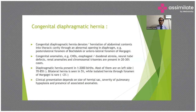Congenital anomalies associated with diaphragmatic hernia include congenital heart disease, esophageal or duodenal atresia, neural tube defects, renal anomalies, and chromosomal trisomy, which are present in 20–30% of cases.